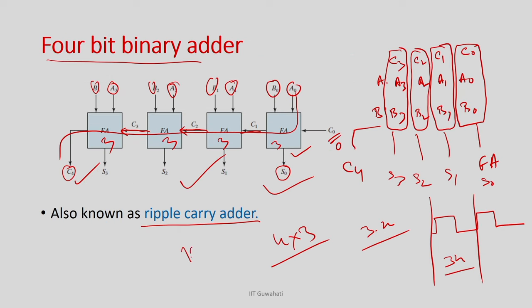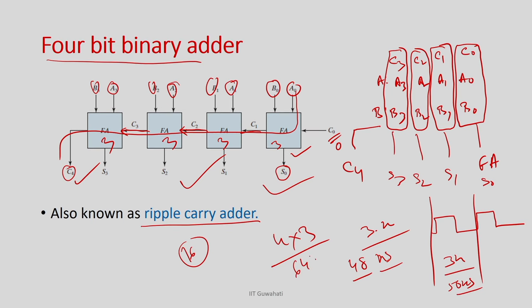Whether it is 2n or 3n, it is a large number for large n. For 16-bit: 3×16=48 gate delays; if one gate takes 1 ns, the clock period must be at least 50 ns. For 64-bit: 3×64=192, requiring ~200 ns clock. So the delay is quite high — this is the main bottleneck of the ripple carry adder.